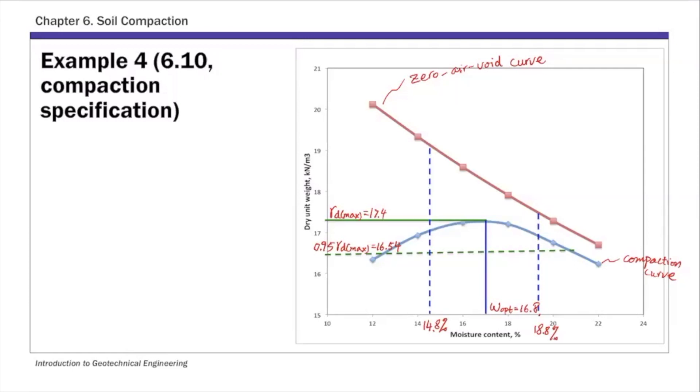And then based on the specifications, we need to meet both at the same time. So that means this shaded region, this shaded area is where your data should plot. So if your in-situ field unit weight fits within this range, they meet both criteria. They meet both specifications.